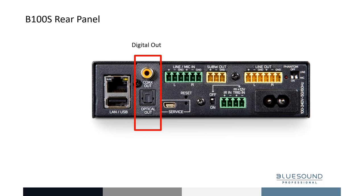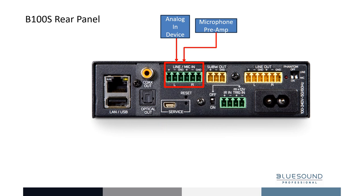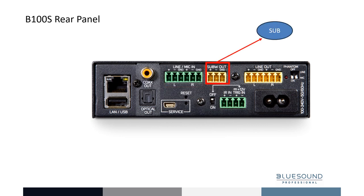Digital output is available via the coax or optical out connector. The balanced line-in mic-in connector can be used to connect to an analog device or microphone preamp. The connector mates are included in the accessory bag of the B100S — please make sure to be on the lookout for these when first unboxing the product. The unit provides a balanced connection point for the subwoofer out, and the settings for the subwoofer are accessible from the audio settings of the app. Turn subwoofer on and view and adjust the crossover point accordingly. The reset button is used in conjunction with the factory reset procedure.